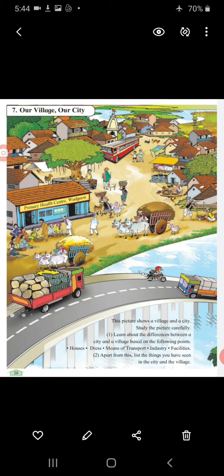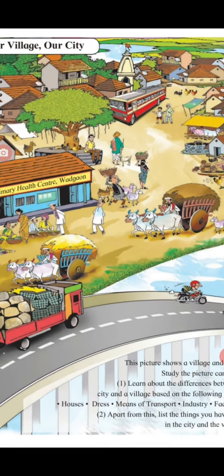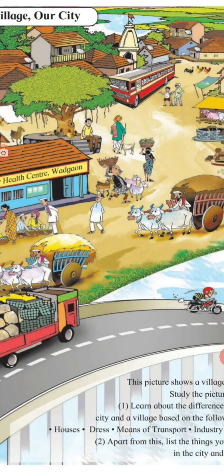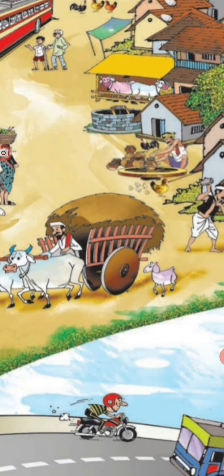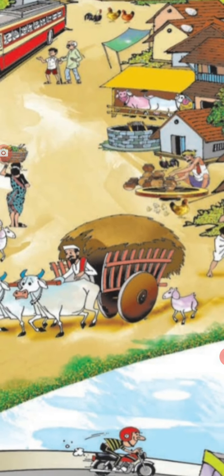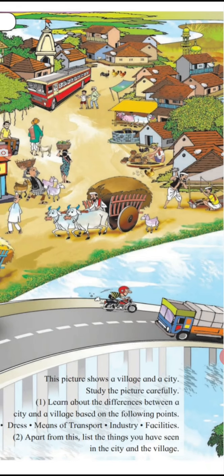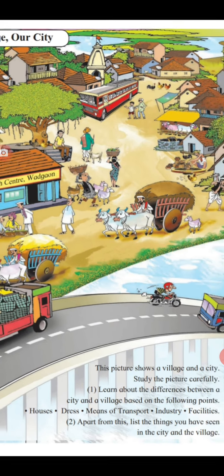In the village, people are doing farming. They are using bullock carts. You can see water, and there is a well where water is available. So this is a village.